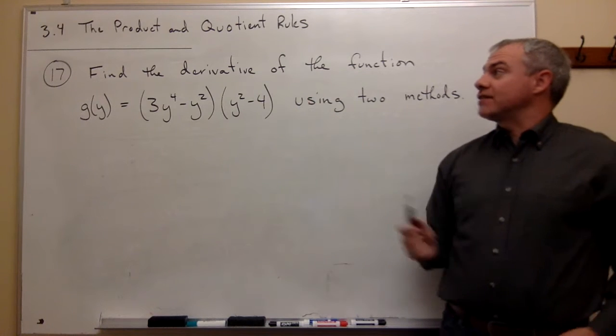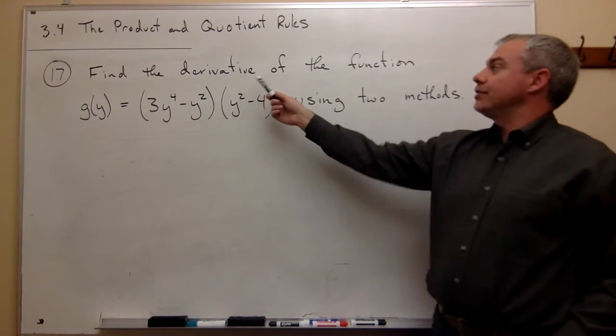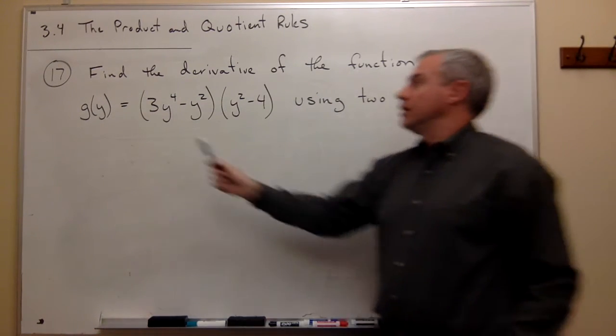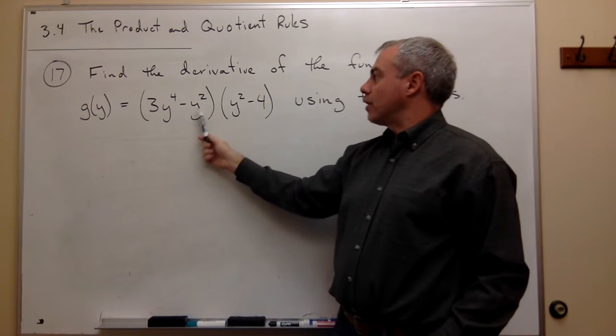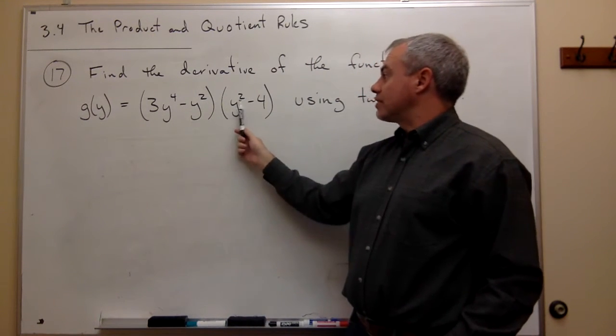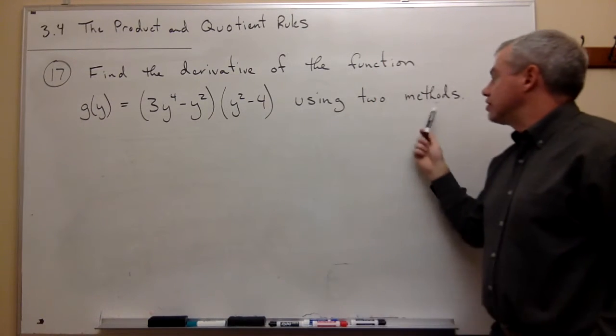Okay, in problem number 17, we want to find the derivative of the function g(y) = (3y^4 - y^2)(y^2 - 4) using two different methods.